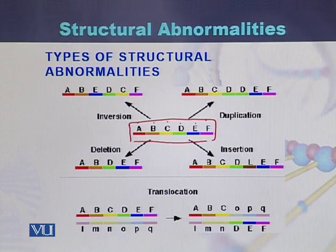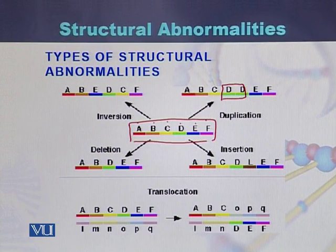If there is a duplication in the chromosome, then it will be A, B, C, D and D. So this part of the chromosome has been duplicated.